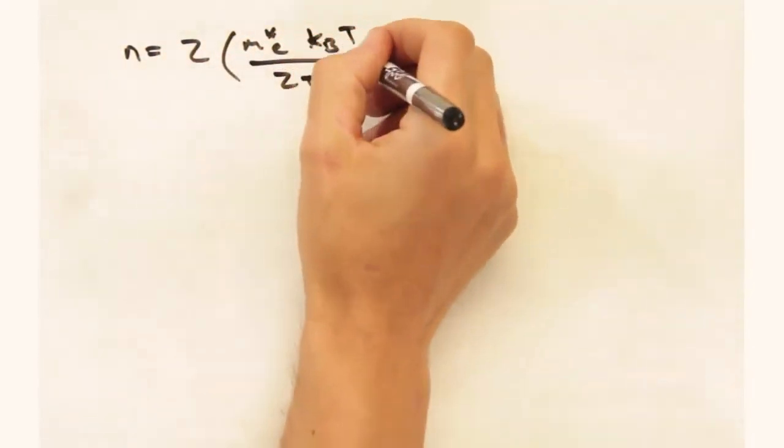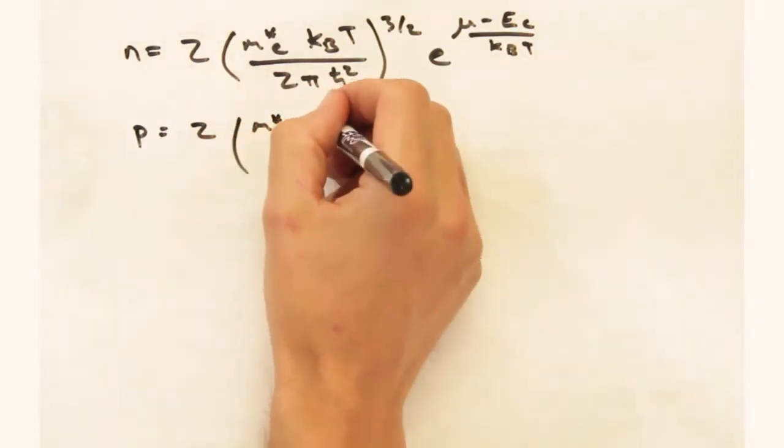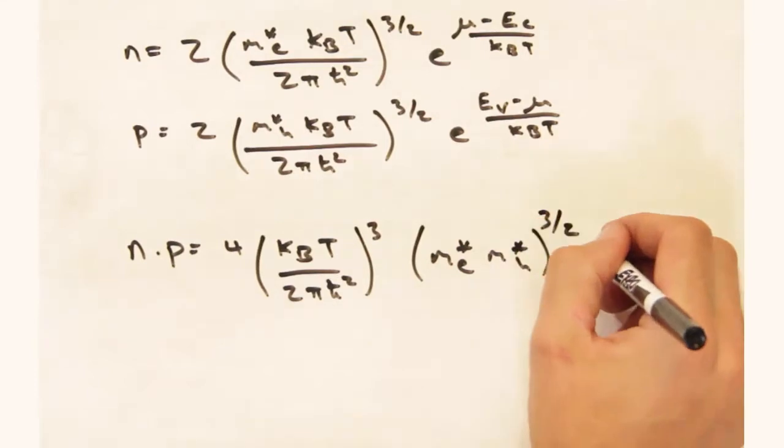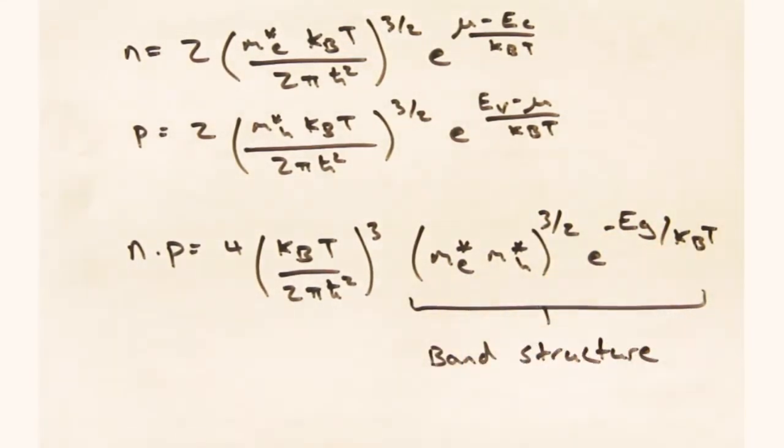So it looks like the product of n and p is independent of the impurity concentration. Let's see if this result agrees with what we developed earlier. Taking our expressions for n and p and multiplying them together, we obtain the following expression. Ah, so the Fermi level doesn't appear in this expression. It's all about the band structure and temperature.